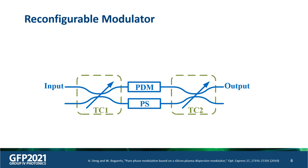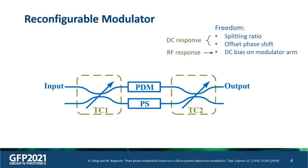The scheme consists of two tunable couplers, a phase dispersion modulator, and a phase shifter. It has several degrees of freedom: for the tunable couplers, we can change the splitting ratio; for the phase shifter, we can change the offset phase shift of the MZI; and we can also change the DC bias on the modulator arm. This allows us to tune both the DC response and the RF response of this modulator.